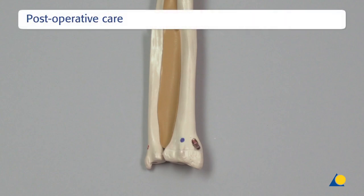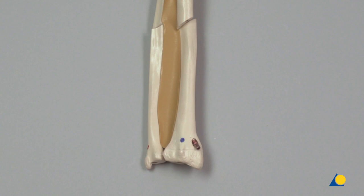No post-operative immobilisation is required; active motion can commence as soon as it is tolerated. If the patient experiences pain, an arm sling or dorsal splint can be used. The removal of the nails is usually recommended after 4 to 6 months, dependent on fully circumferential complete bone modelling at the fracture site as verified with fluoroscopy. As bone healing varies with age, there is no recommendation for nail removal after a specific number of months.